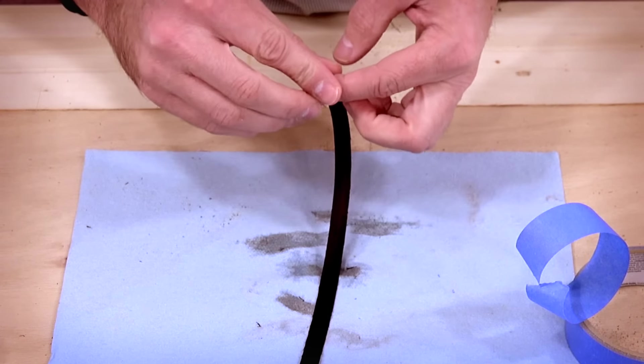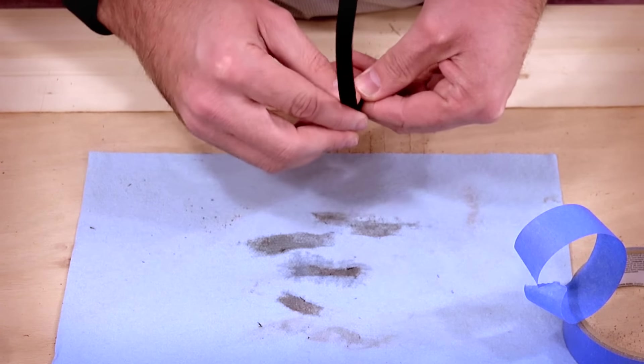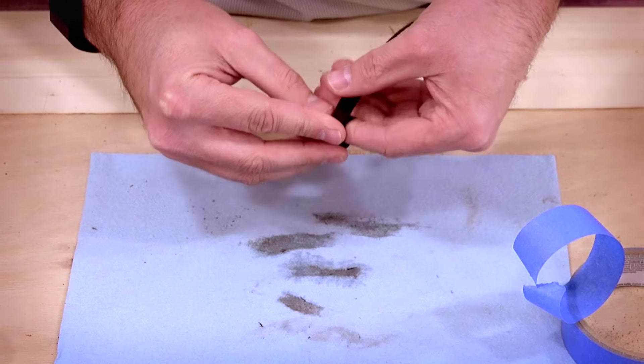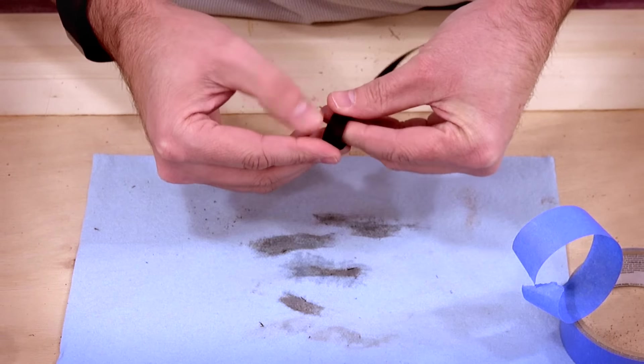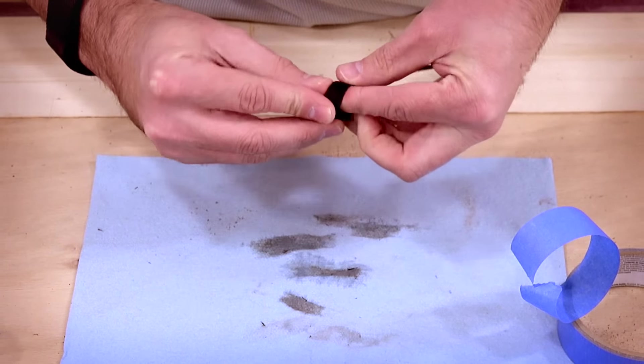While still wet, you'll then want to coil the strips onto itself. You don't need to coil it to the size of the rings just yet. But, we want to coil it just enough to where it doesn't break and then wrap it with masking tape to keep it in that position.